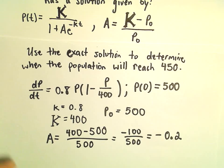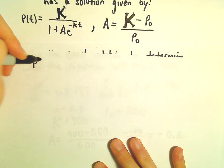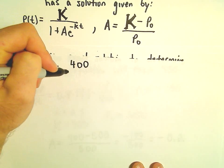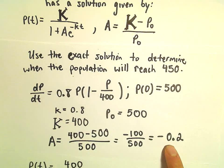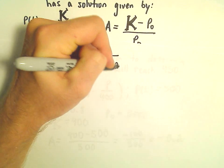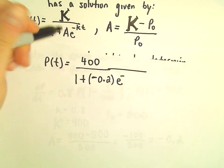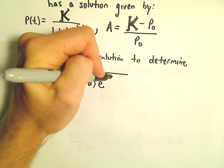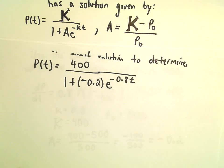Our population model, P(t), can therefore be described by the carrying capacity, which we said was 400, over 1 plus our A value - our A value here was negative 0.2. And then we'll take this and multiply by e to the negative little k, so our little k value was 0.8 times t. So that's now the population model.